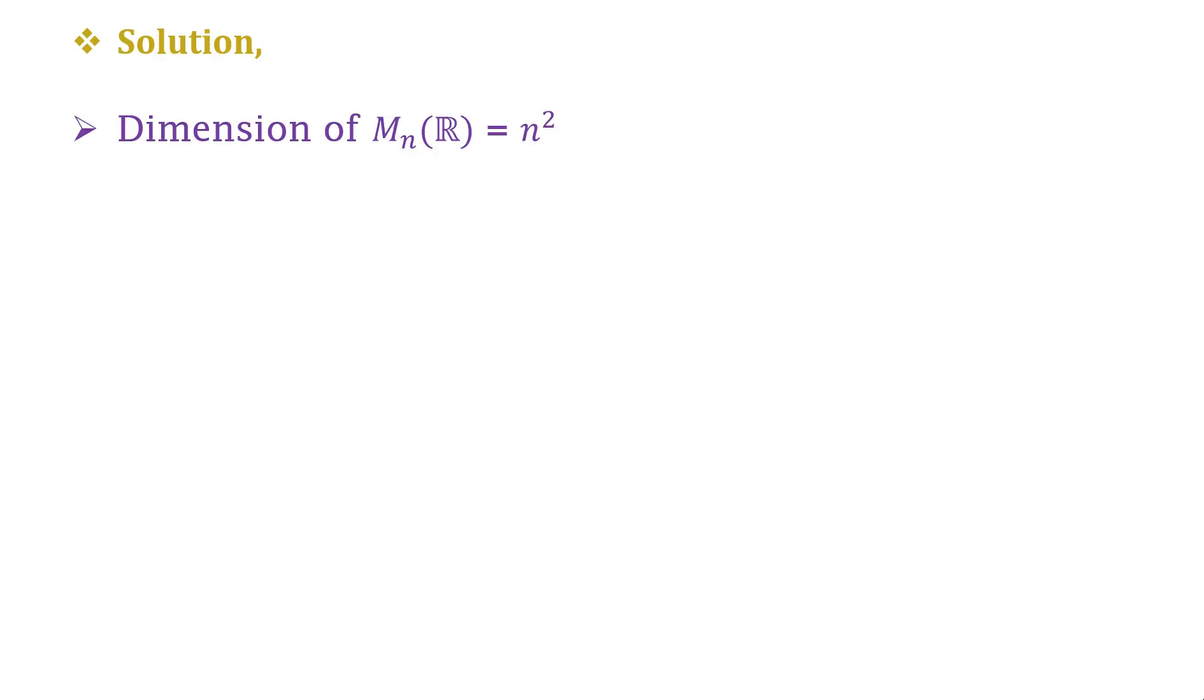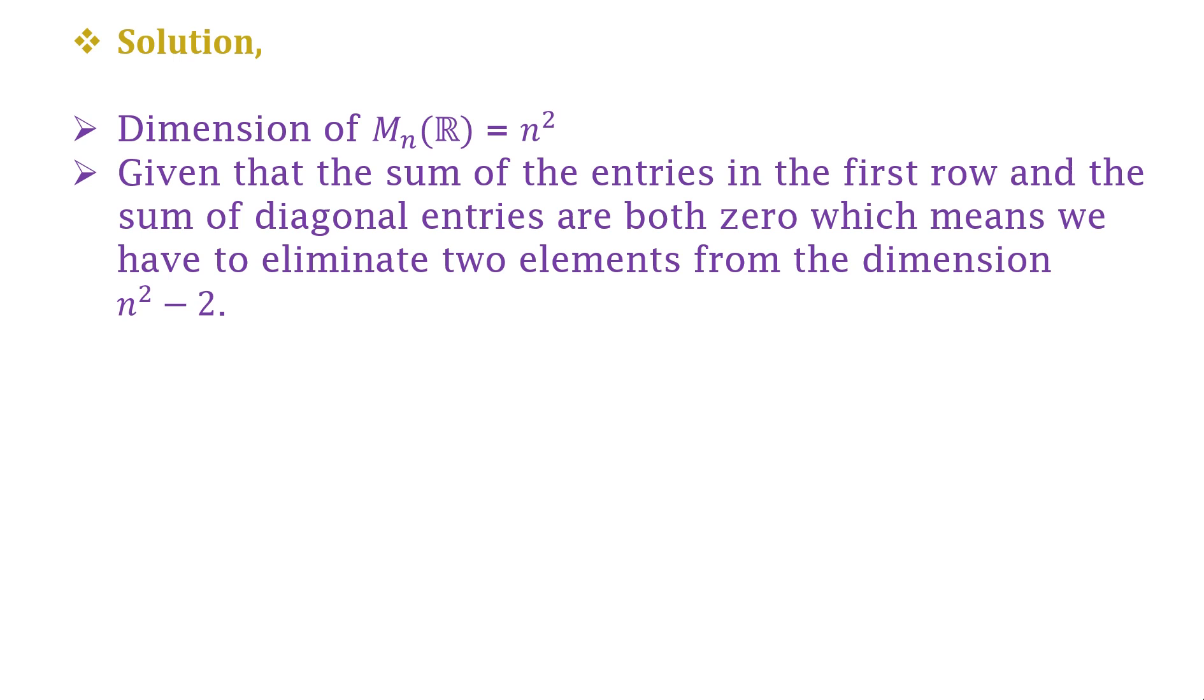In the question it is given M_n(ℝ) and we know that dimension of M_n(ℝ) is n². It is also given that the sum of the entries in the first row and the sum of the diagonal entries are both zero.